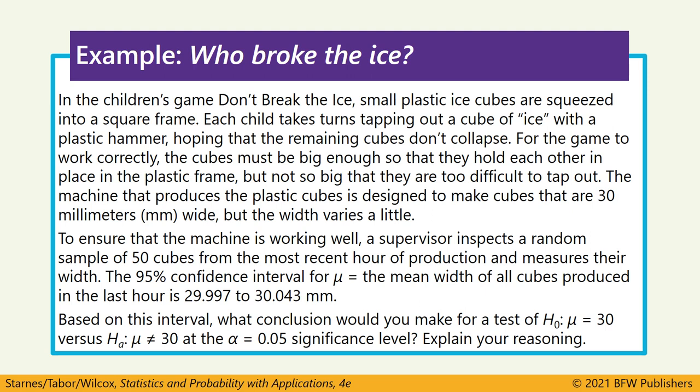In the children's game, Don't Break the Ice, there are a whole bunch of small plastic ice cubes that average 30 millimeters. We want to make sure this game is working well. So a supervisor inspects a random sample of 50 cubes from the most recent hour and measures their width. The 95% confidence interval for the interval of mu, representing the mean width of all cubes produced in the last hour, gives the interval from 29.97 to 30.043. Based on this interval, what conclusion would we make for a hypothesis test where the null value is mu equals 30 and the alternative is that it's not equal to 30? It also gives us an alpha level here of 5%.